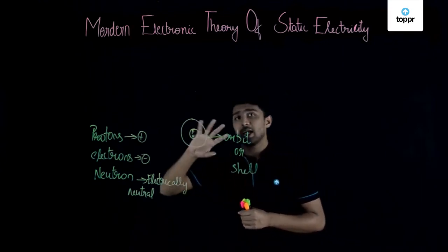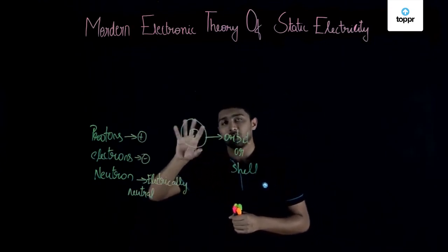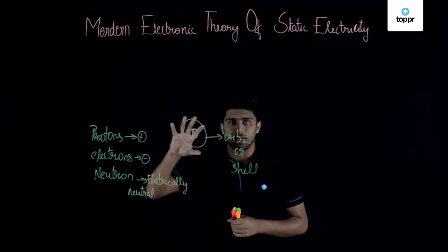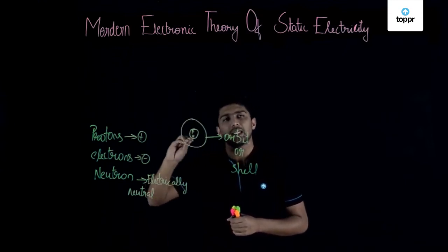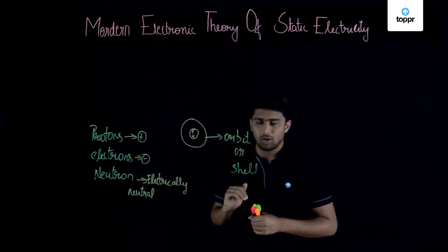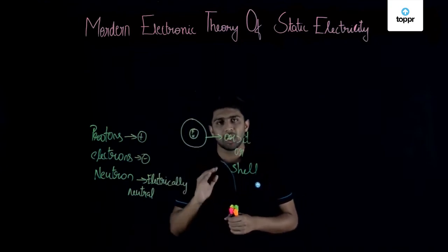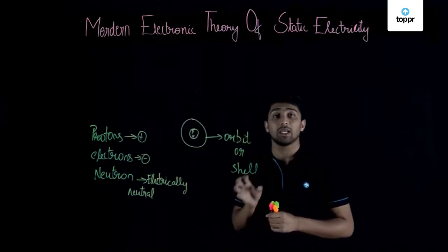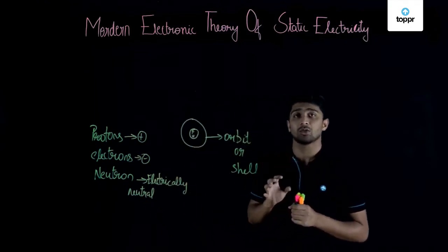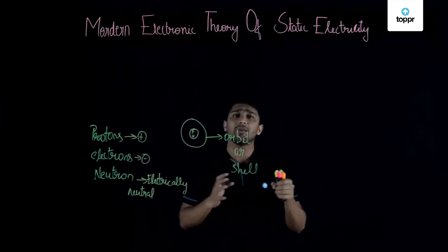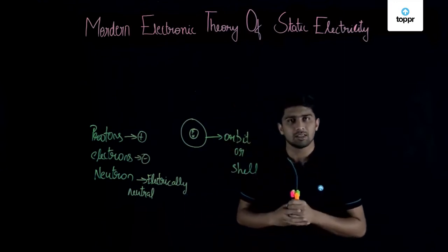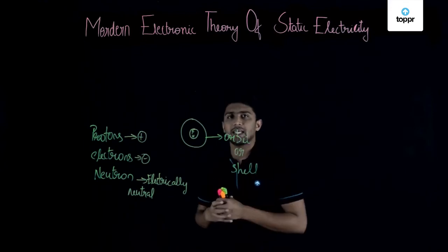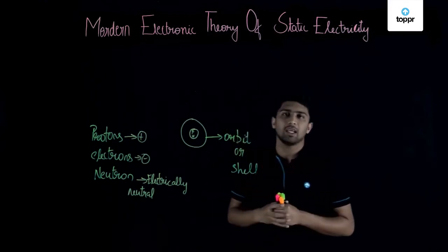The electrons which revolve around the nucleus in the outermost orbit are called valence electrons. Beyond that outermost shell, if any electron is revolving around the nucleus, those electrons will be relatively very, very weak in their strength. So those electrons are considered as free electrons.